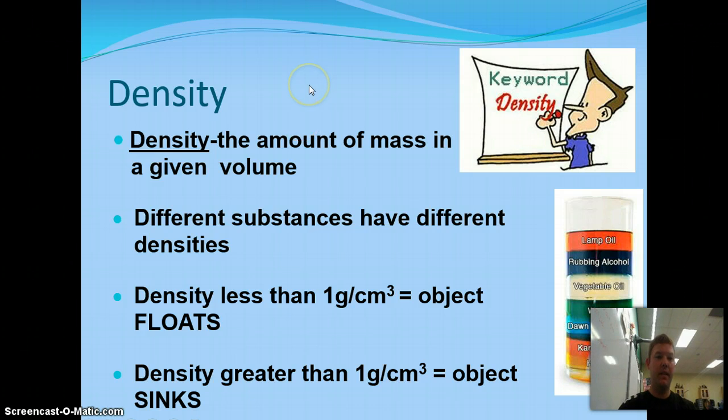Density is the amount of mass in a given volume. Notice there's two things: it's the amount of mass and a certain amount of volume. Different substances have different densities, and those densities will tell us a lot about an object, whether an object will sink or float. If an object's density is less than one gram per centimeter cubed, the object will float. If its density is greater than one gram per centimeter cubed, the object will sink. We will focus more on density in the next chapter.